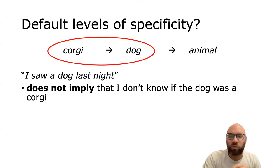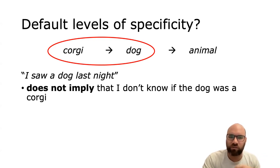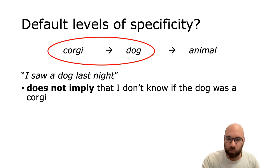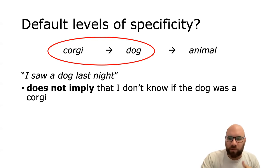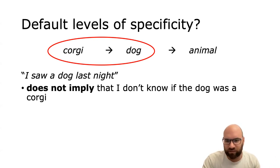So what this example shows us is that which alternatives become available — whether or not we think saying 'corgi' is a relevant alternative — can really depend on the context we're in. The whole idea of alternatives and how scalar implicatures work is not completely based on formal definitions like entailment relationships alone. Maybe those are a necessary condition for an alternative to arise, but alternatives are also very strongly affected by context — by the real-world context, as opposed to just the linguistic and semantic background.